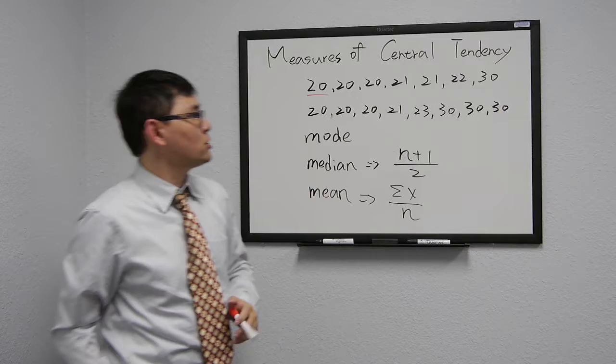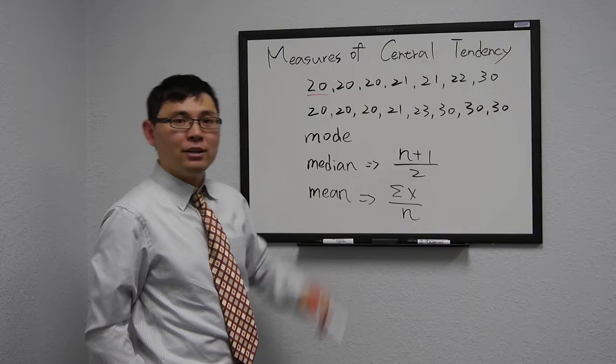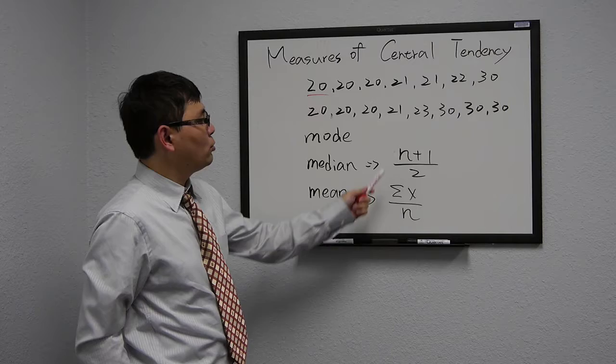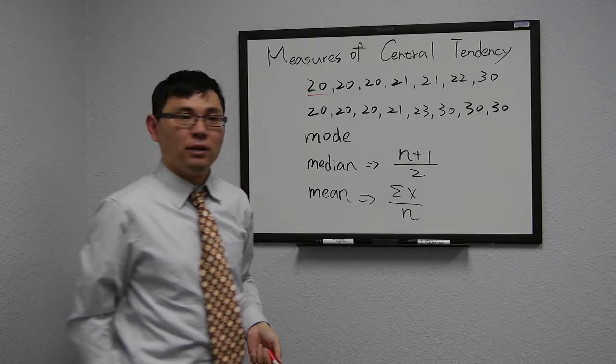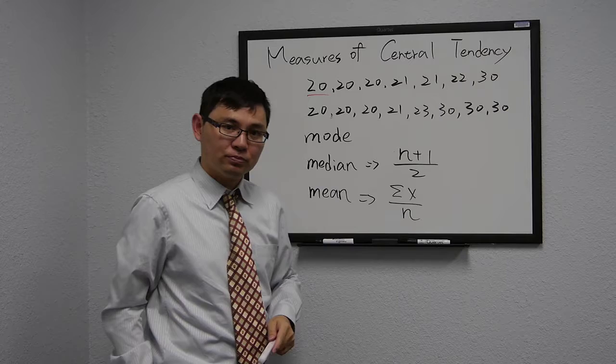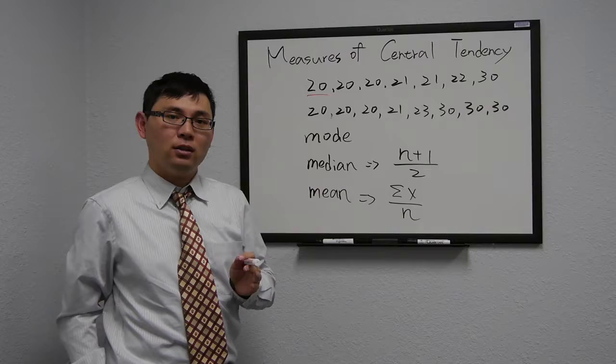So let's see the first group of numbers again. Very nicely, they are put in order already. So we just use this formula. We have 7 cases. So 7 plus 1 divided by 2 equals 4. So the fourth case is median, and that is 21.